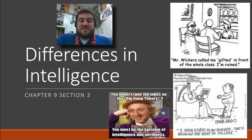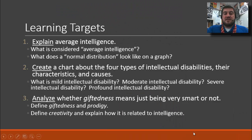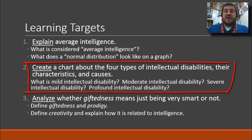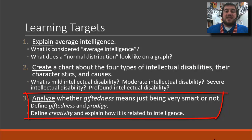Welcome back to this last video for unit 5, discussing the differences in intelligence. Now that we know what intelligence is, we can discuss the differences between intelligence. Your learning targets for today are to explain what average intelligence is, create a chart for the four types of intellectual disabilities with their characteristics and causes, and analyze giftedness and how it is linked to creativity.